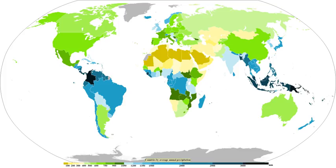Convective rain, or showery precipitation, occurs from convective clouds such as cumulonimbus or cumulus congestus. It falls as showers with rapidly changing intensity. Convective precipitation falls over a certain area for a relatively short time, as convective clouds have limited horizontal extent. Most precipitation in the tropics appears to be convective, though it has been suggested that stratiform precipitation also occurs. Graupel and hail indicate convection. In mid-latitudes, convective precipitation is intermittent and often associated with baroclinic boundaries such as cold fronts, squall lines, and warm fronts.